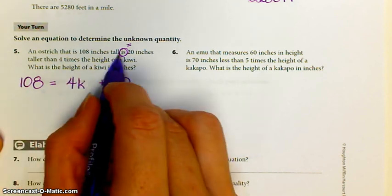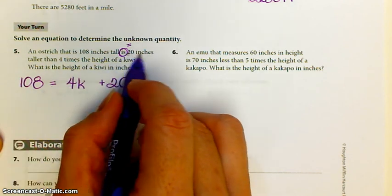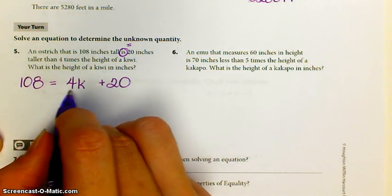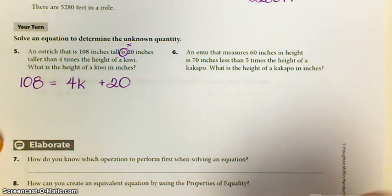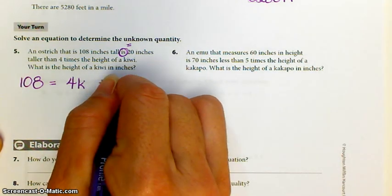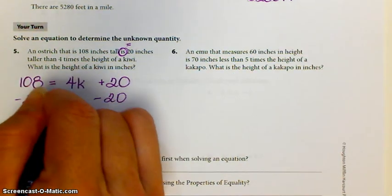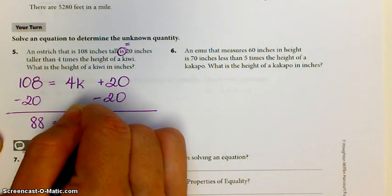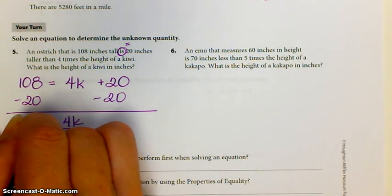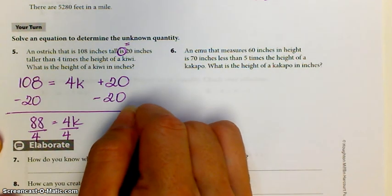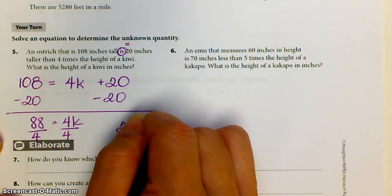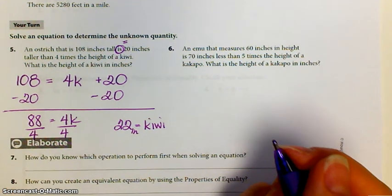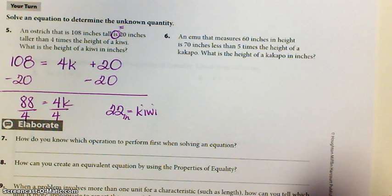An ostrich that's 108 inches is 20 inches taller, so plus 20. 20 inches taller than four times the height of a kiwi. 4K plus 20 is 108. All you really have to do is minus 20 to both sides. That would be 88. That's equal to 4K. Divide both sides by four. 88 divided by four is 22. So 22 inches is the height of your kiwi. And a kiwi is a little bird, not the kiwi fruit.